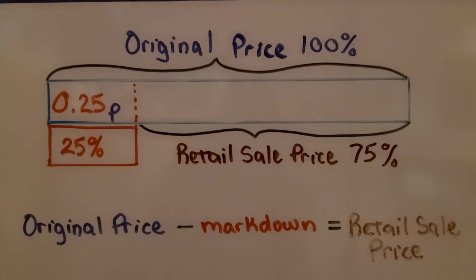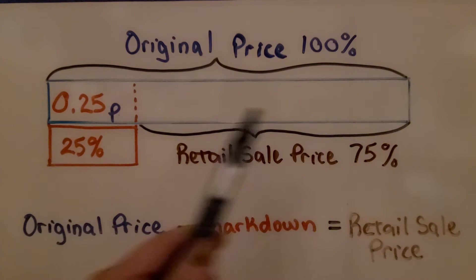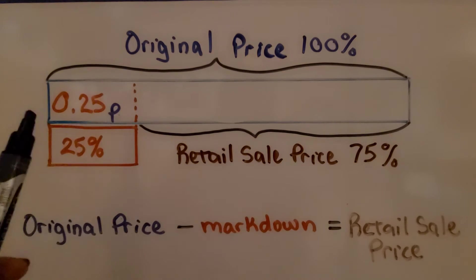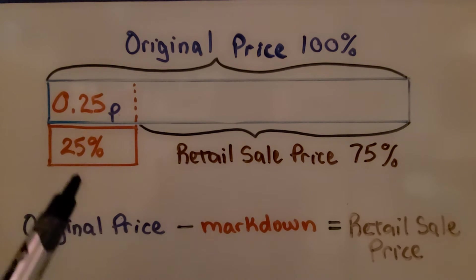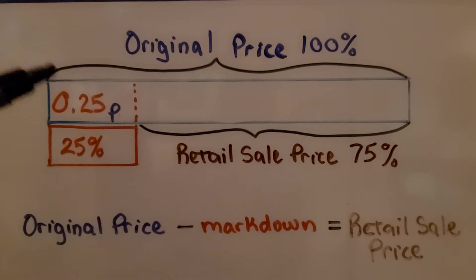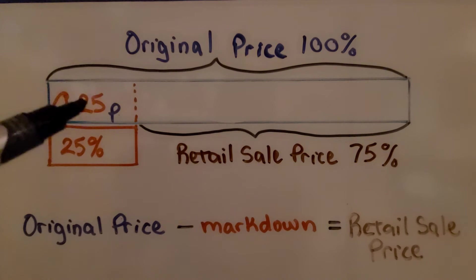So here's our bar model. The entire bar is the original price. It's 100% of the price of the item. If we're going to take 25% off, then we're going to remove 0.25 multiplied by this original price, P.